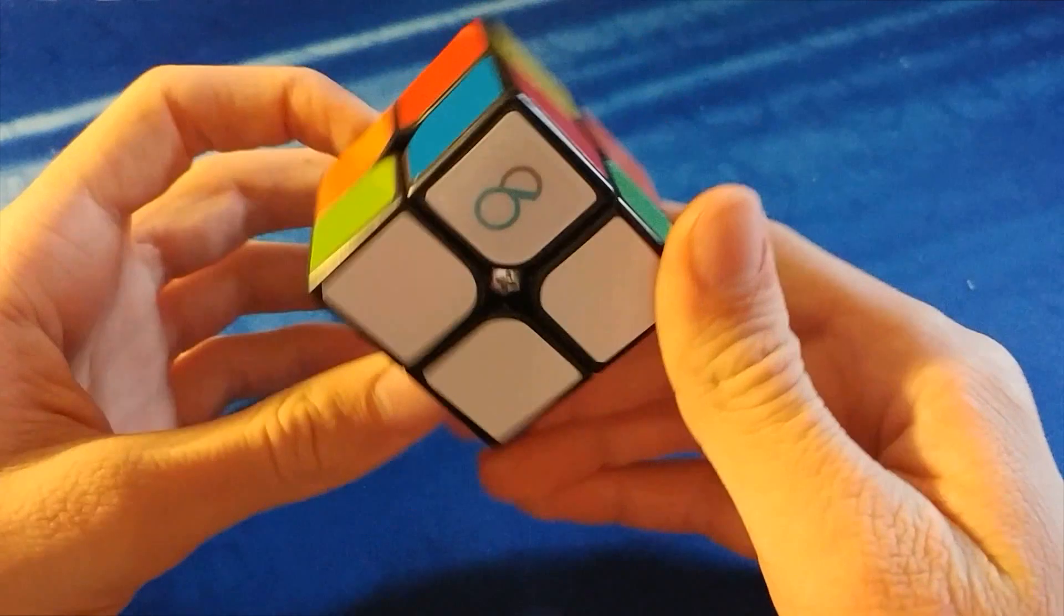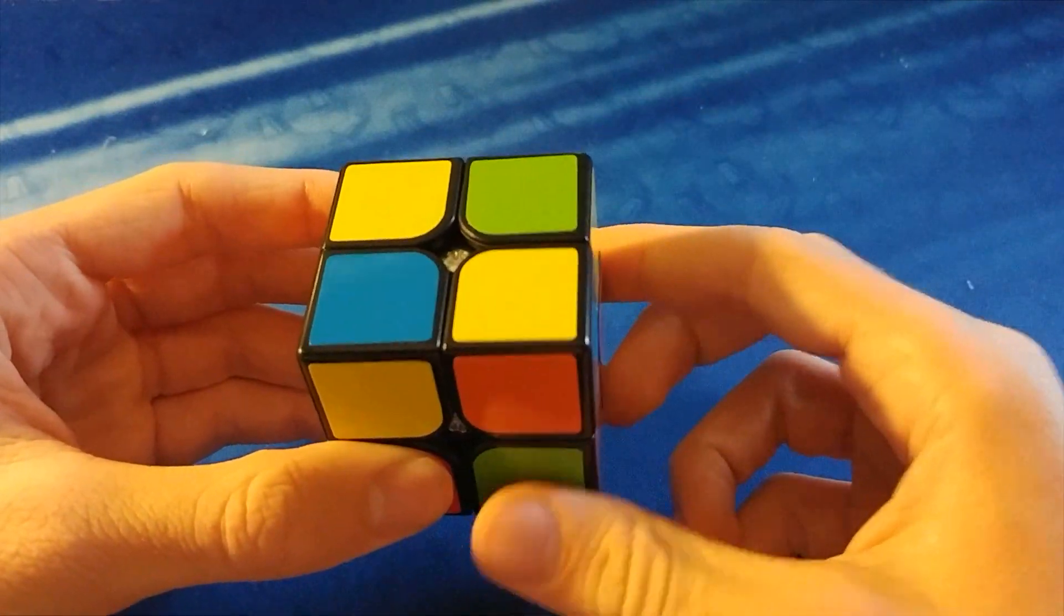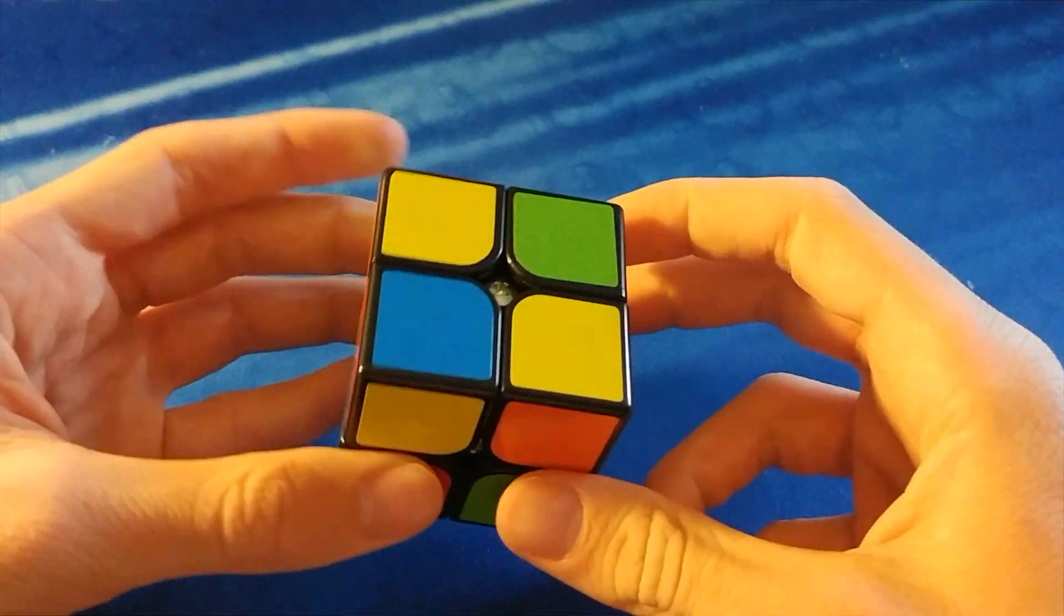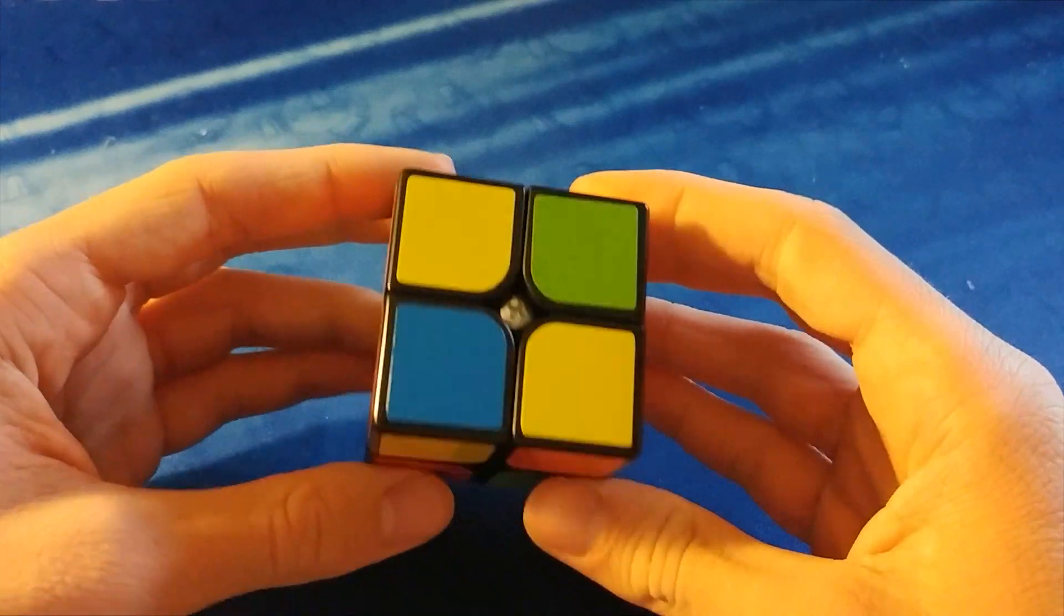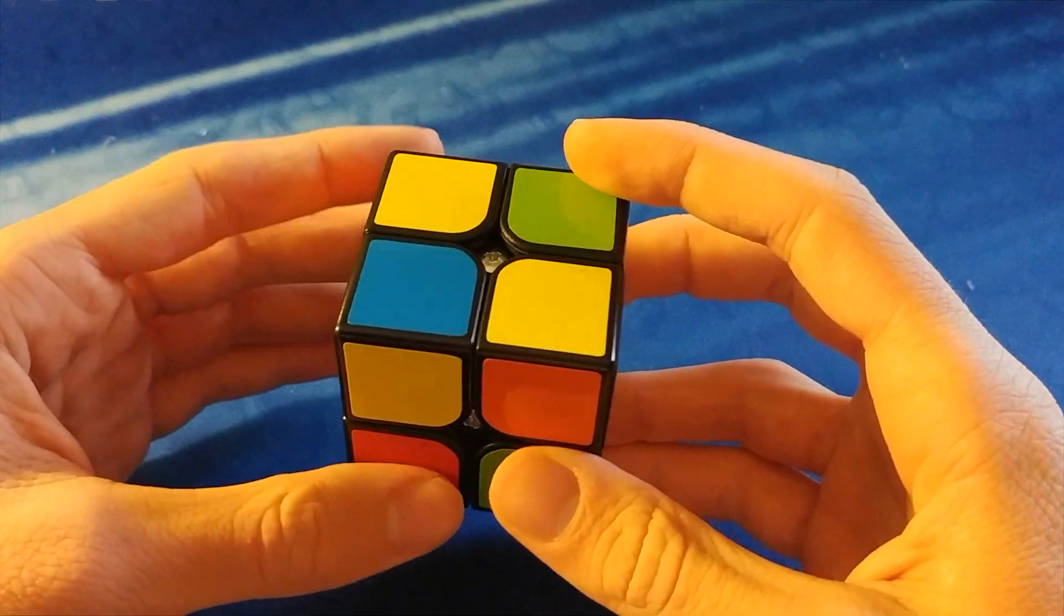All right, so after we have one side done, the next step is to solve the top side, or the opposite side. So yellow is opposite of white, so there's no centers, but I still know I have to solve yellow, because I know that white and yellow are opposites.